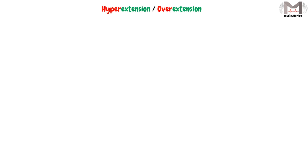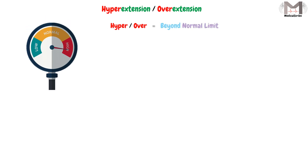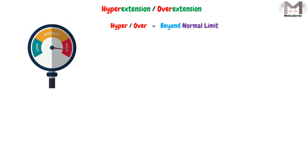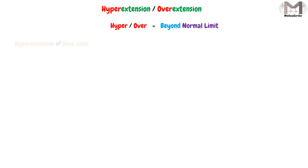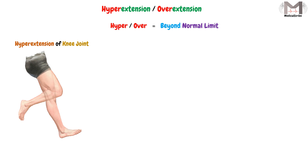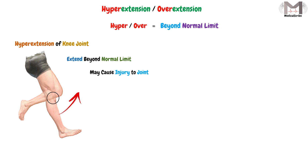Finally, there is a term we may encounter: hyperextension, or overextension. Here, 'hyper' or 'over' means beyond the normal limit. In the case of hyperextension of the knee joint, the knee extends beyond its normal limit, which may cause injury to the joint.